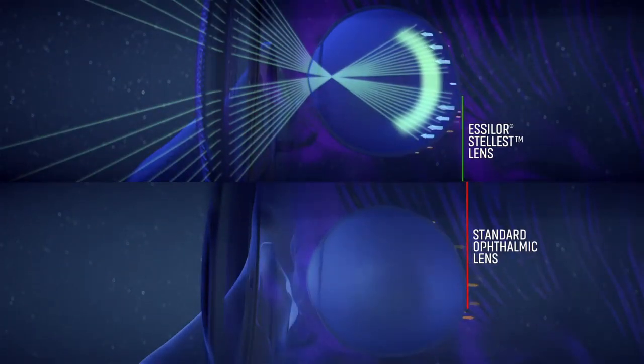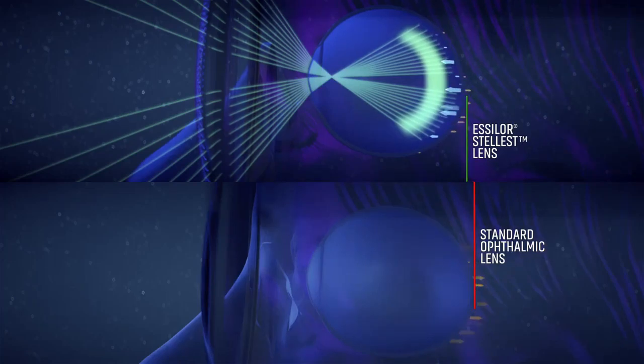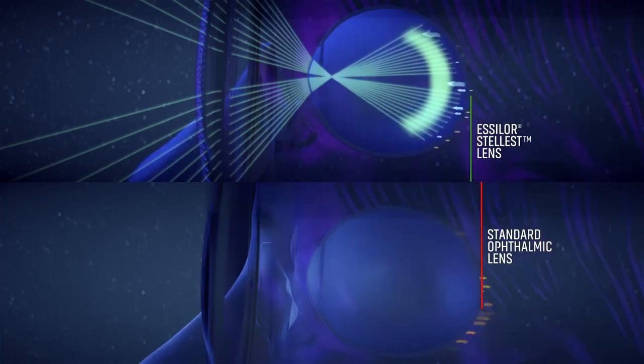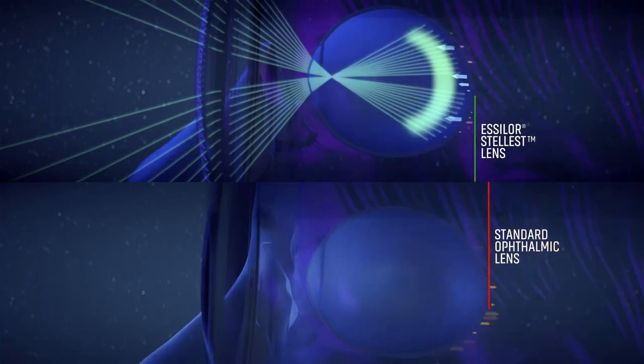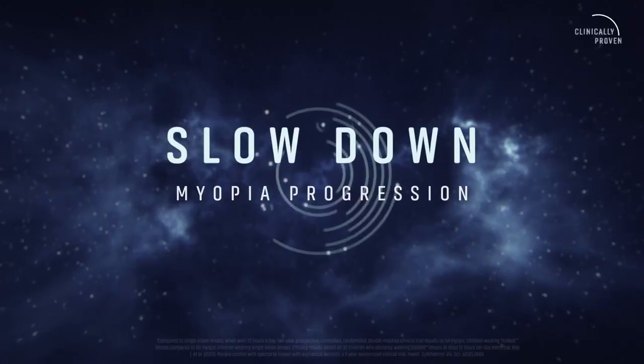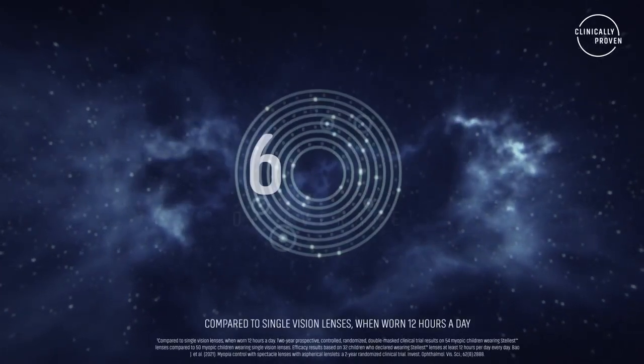Clinical studies on children showed that, compared to single vision lenses, Essilor Stellis lenses slow down myopia progression by 67% on average, when worn 12 hours a day.